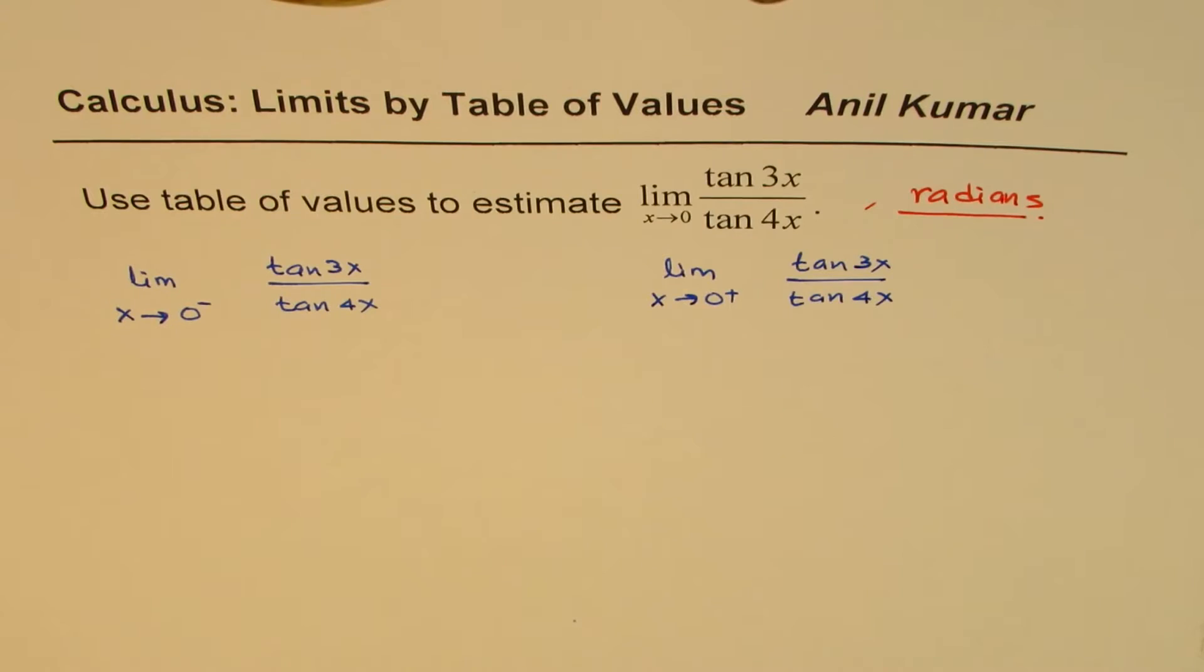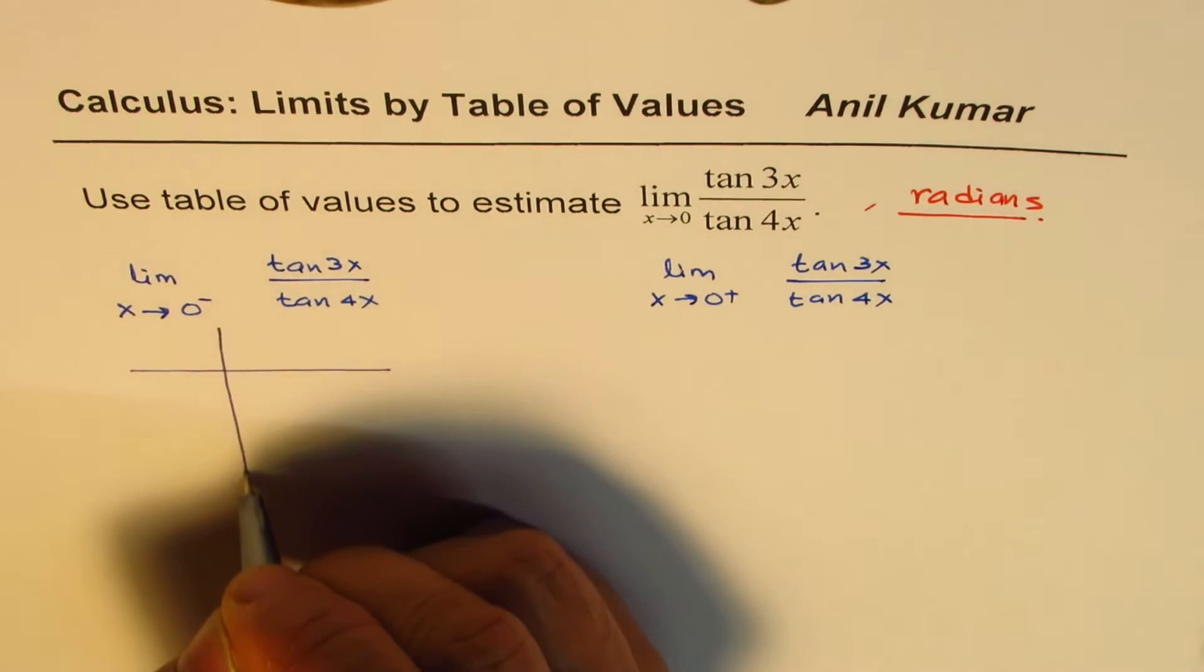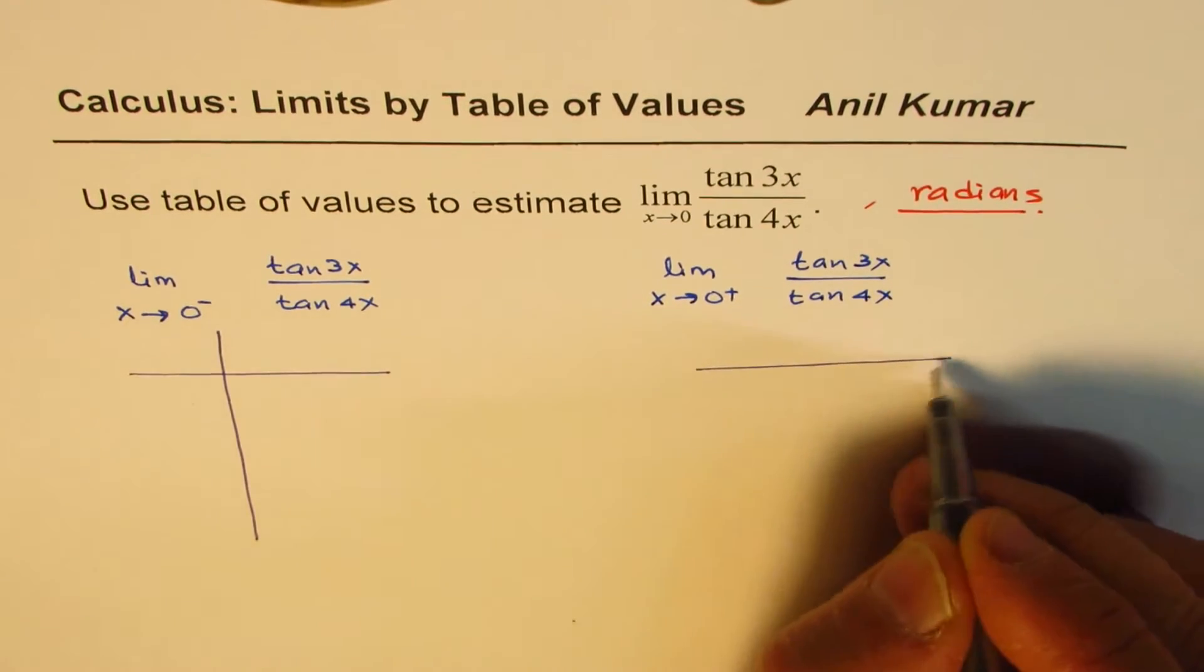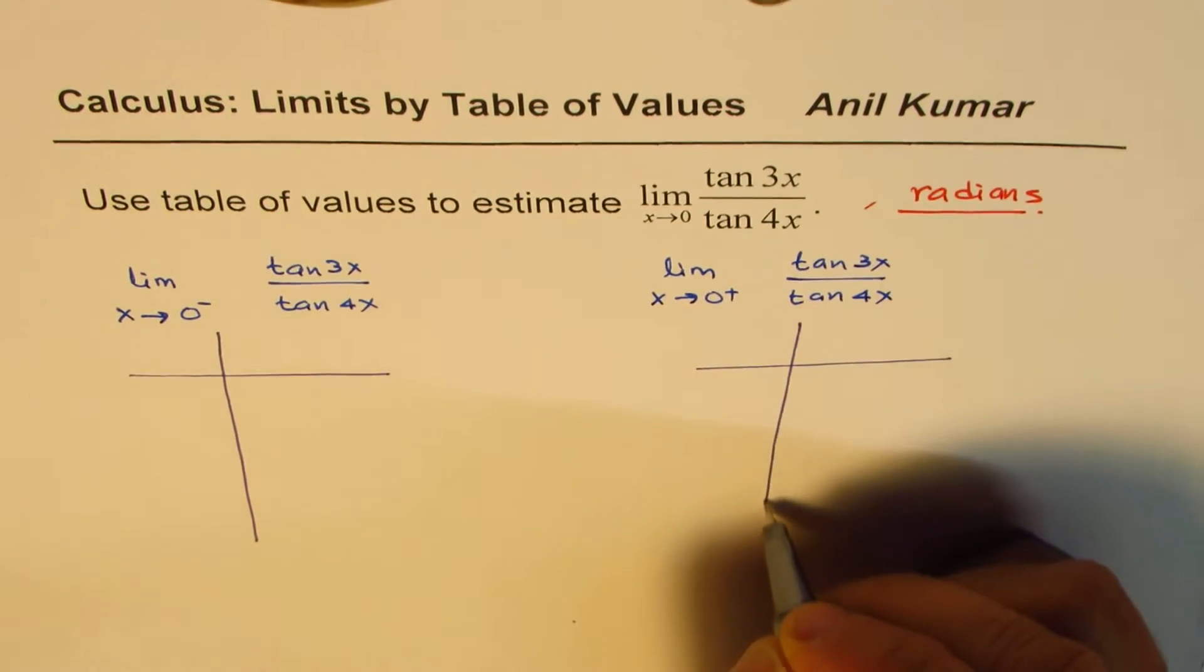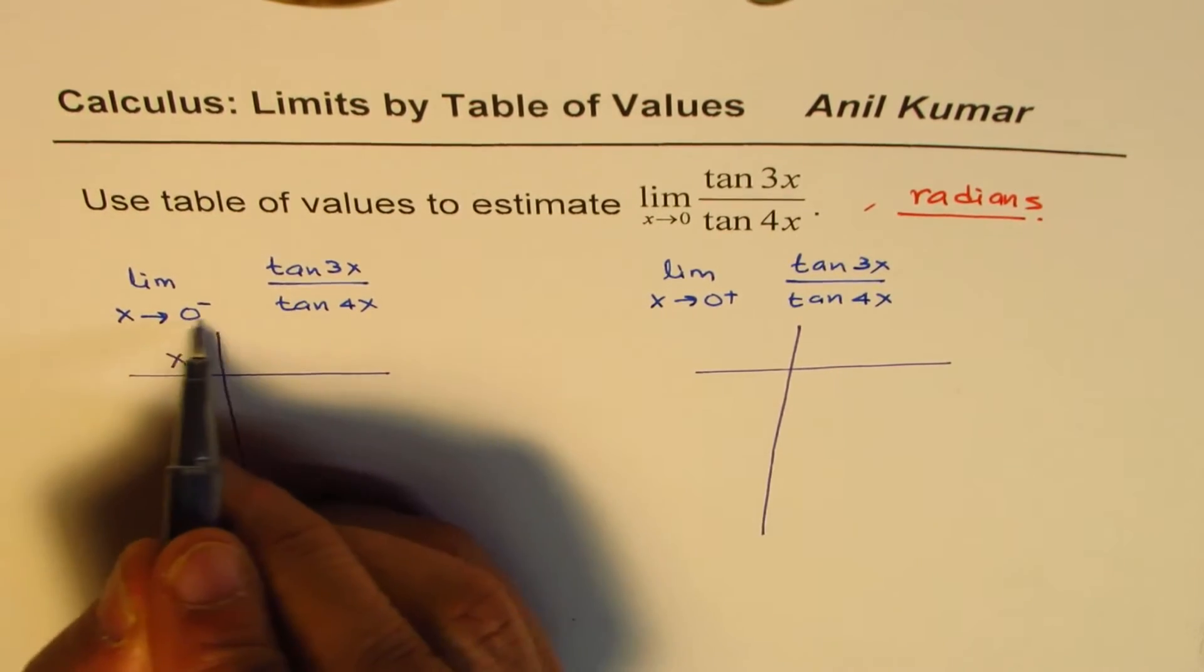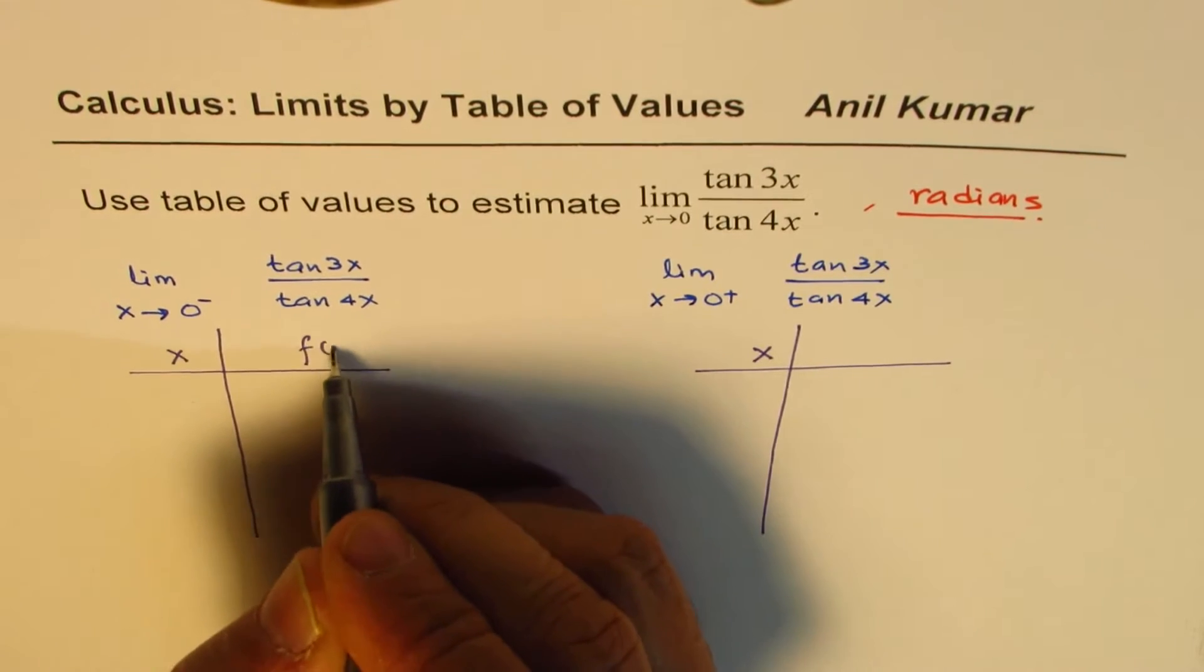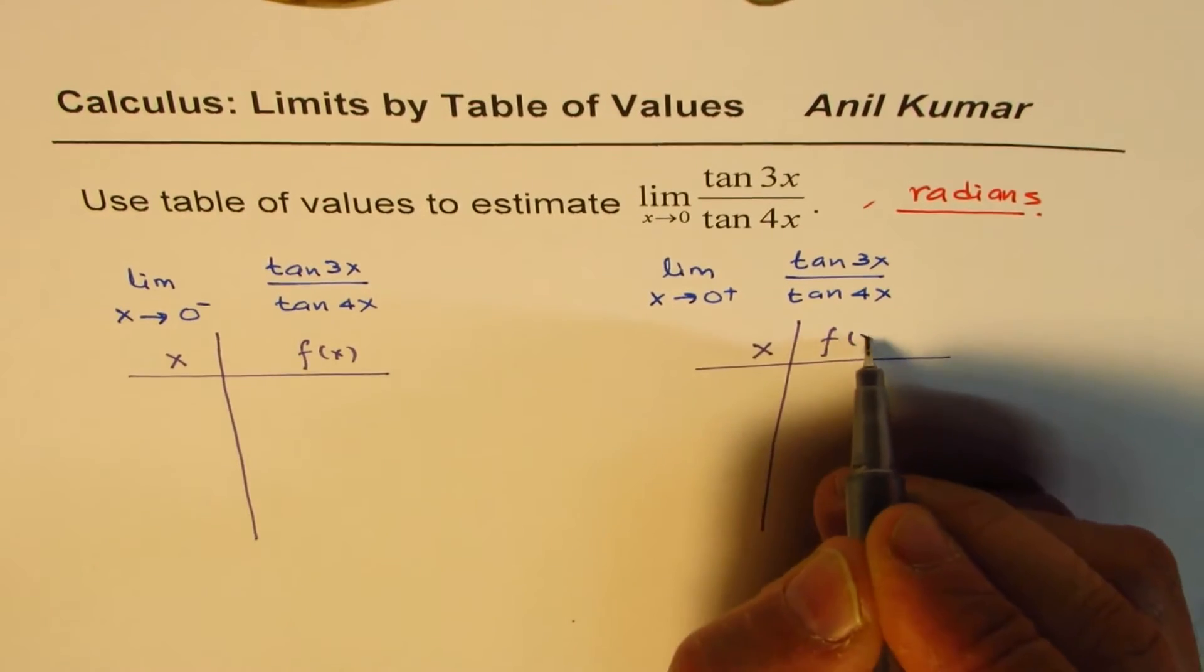So let's make table of values to estimate this result. What we will do here is take the values of x as close to 0 as possible. We'll write x, and when you're approaching from the negative side, let's call this as a function f of x. In both the cases, make a table like this.